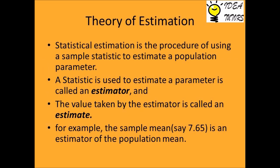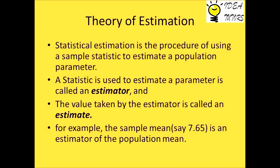Welcome to Idea Tutors. Today's topic is Theory of Estimation. Statistical estimation is the procedure of using a sample statistic to estimate a population parameter. A statistic used to estimate a parameter is called an estimator, and the value taken by the estimator is called an estimate. For example, the sample mean 7.65 is an estimator of the population mean.